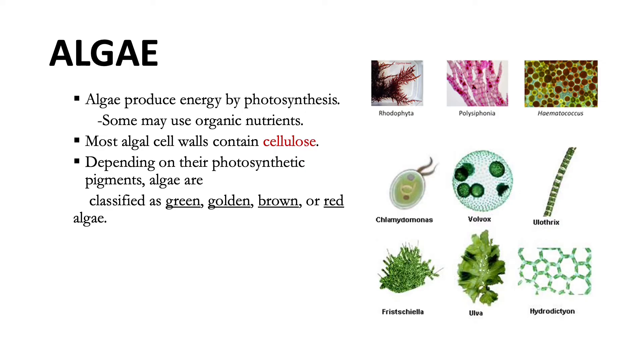Depending on the types of photosynthetic pigments they possess, algae are classified as green, golden, brown, or red.